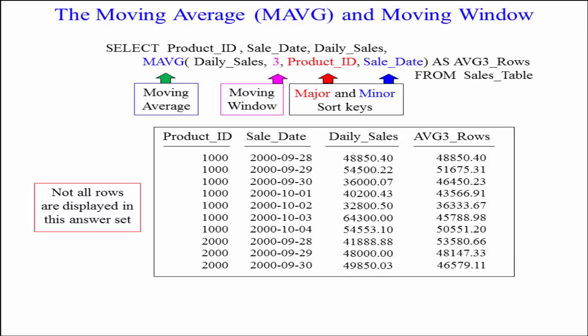Then we're going to start taking the average of daily sales every three rows. It's going to continue to add up.